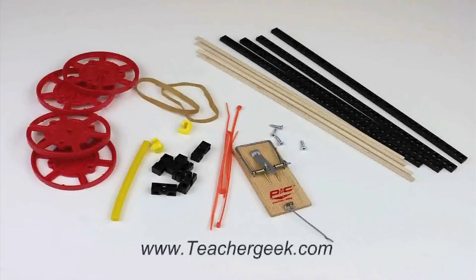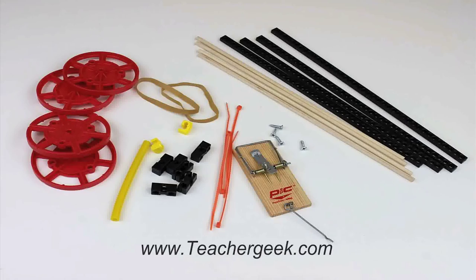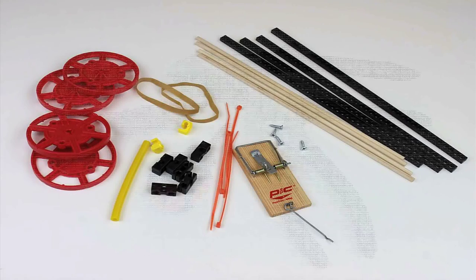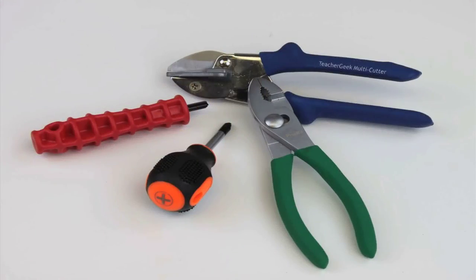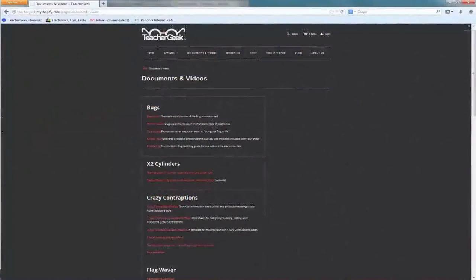A list of the parts can be found on the mousetrap vehicle build guide at teachergeek.com under documents. For this kit you will need a pair of our teachergeek multi-cutters, a teachergeek reamer, a number two Phillips head screwdriver, and a pair of pliers are optional. Components and free documents for this activity are available at teachergeek.com.